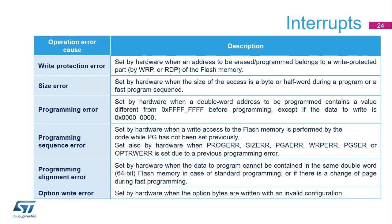This table indicates the sources of operation errors. Two status registers used by software to identify the cause of operation errors are implemented: secure and non-secure. A write protection violation occurs when an attempt to write to a write-protected area is detected. A size error occurs when the data to be programmed is not word-aligned. A programming sequential error occurs when a program operation is attempted without having previously erased the location. A programming alignment error occurs when a complete double word is not provided before initiating a standard program operation. An option write error occurs when the option bytes are written with an invalid configuration.